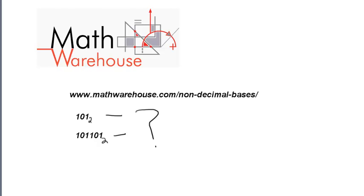Welcome to the second video by Math Warehouse on working with numbers in other bases. In this tutorial, we're going to look at a quick way of converting numbers that are in binary like 101 base 2 and seeing how we can get that into decimal really quickly.